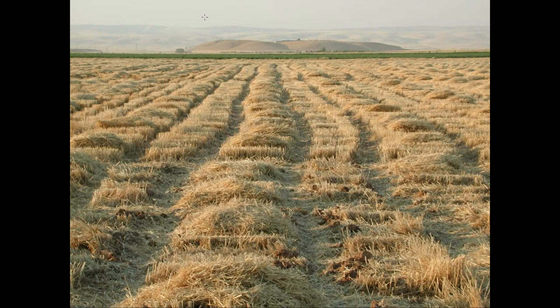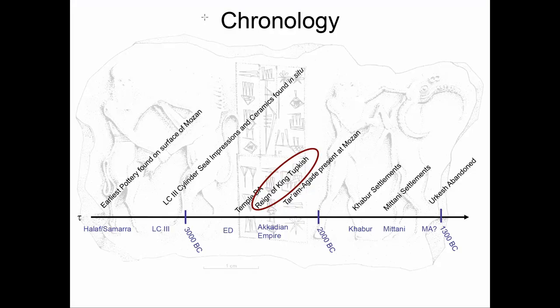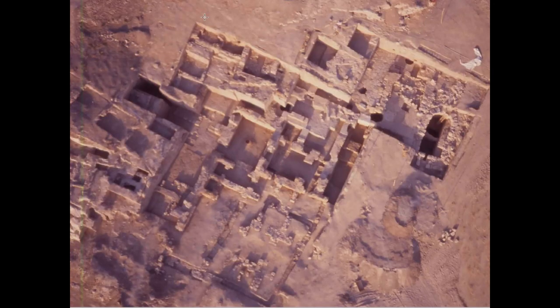The idea of NCAB came about during my work at Tel Mozan in northeastern Syria, where I excavated and published the palace of King Tukkish. You can see it on the left. The palace dates to the Akkadian period, the early Bronze Age of Mesopotamia, and it covers a large area — over 60 meters on the side — and has to date only partially been uncovered, probably about half.